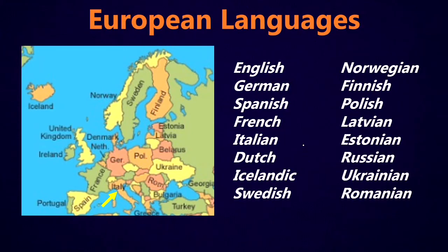For the languages in Europe, there are too many really to list here. So I've got some of the main ones: English, German, Spanish, French, Italian, Dutch, Icelandic, Swedish, Norwegian, Finnish, Polish, Latvian, Estonian, Russian, Ukrainian, Romanian, and there are others as well. The point of showing all this is so that you can see the common suffixes that are on each of these names.